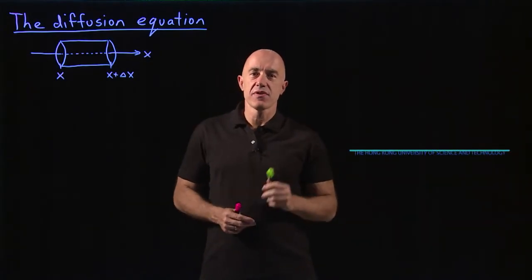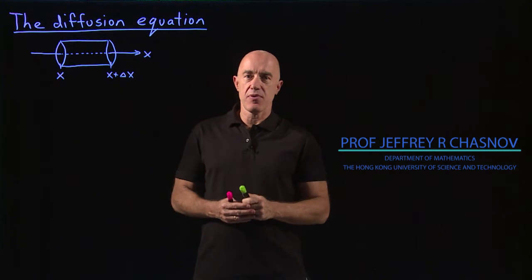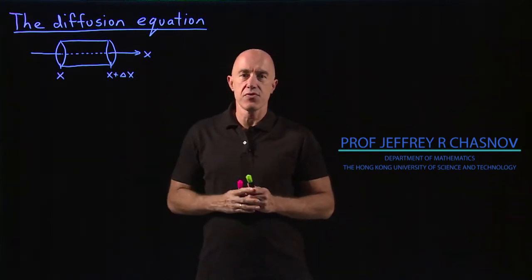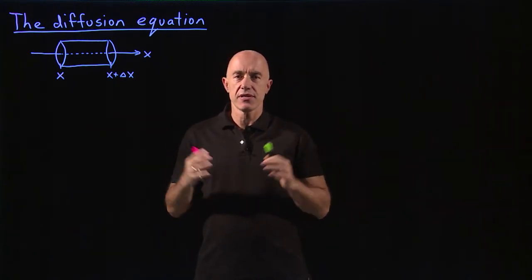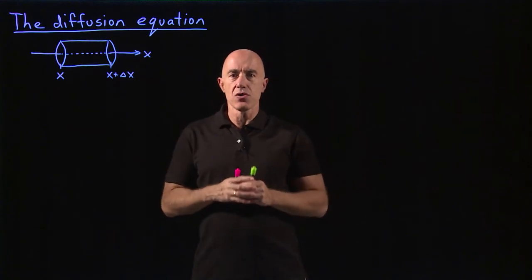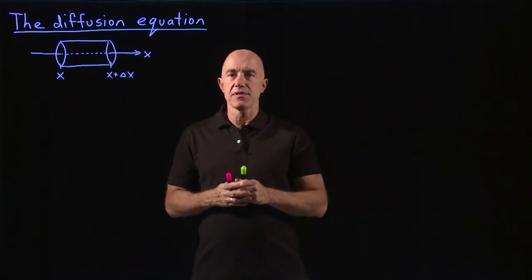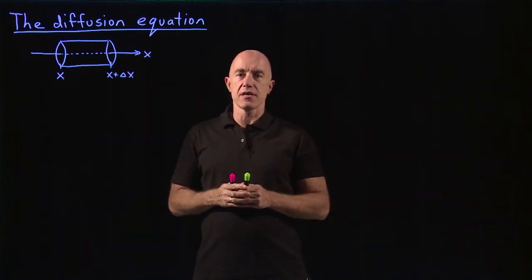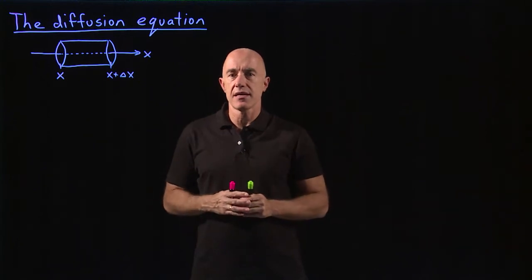In this video, we're going to derive a PDE — a partial differential equation — called the diffusion equation. It's a very fundamental equation that covers how things like smoke or pollution can diffuse in the atmosphere. In our simple example, we're going to consider the diffusion of dye in a pipe.